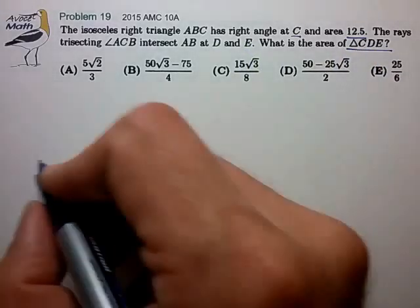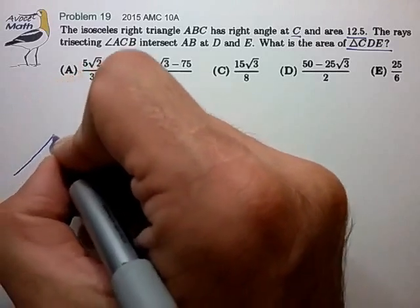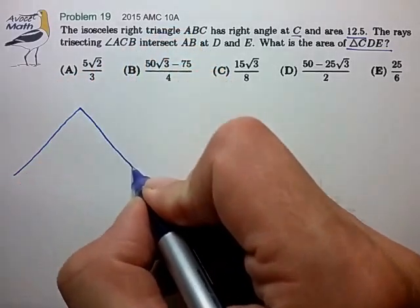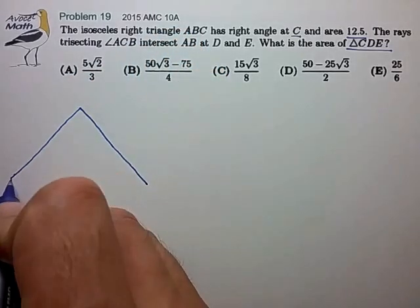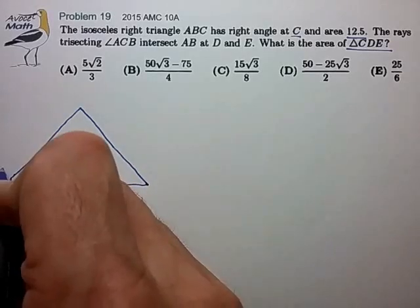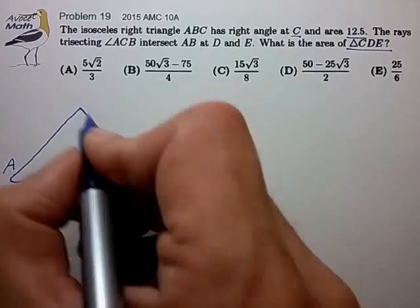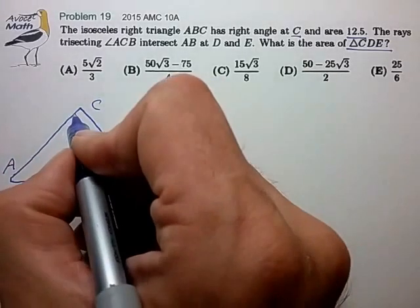This is a case where a careful drawing is going to help us. So let's draw our triangle carefully. That's triangle ABC with right angle at C.